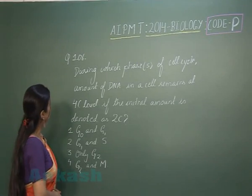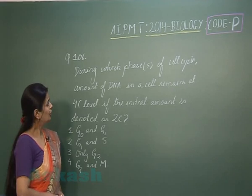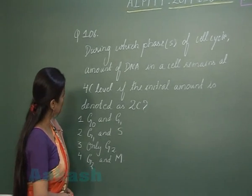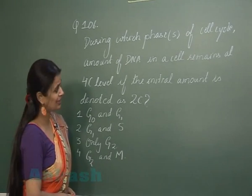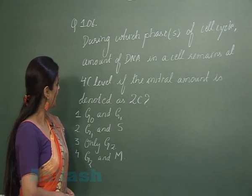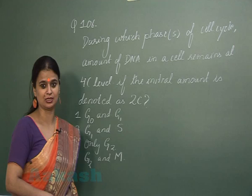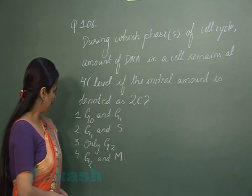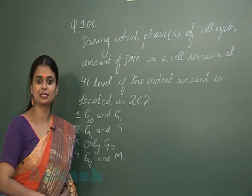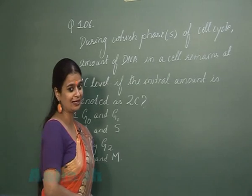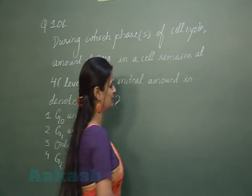So now, question number 106: During which phase of cell cycle does the amount of DNA in a cell remain at 4C level if the initial amount is 2C? Now for explaining this question, I am showing you a diagrammatic representation of the cell cycle.